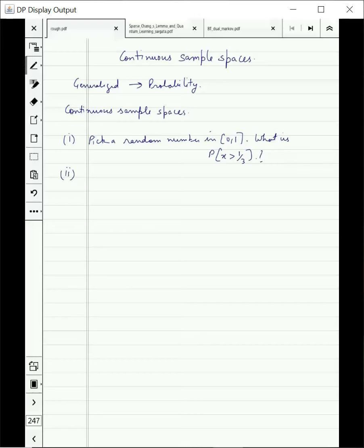You can also ask that you spin a wheel. What is the probability that the arrow lands in the first quadrant? This could again be an example of a continuous sample.